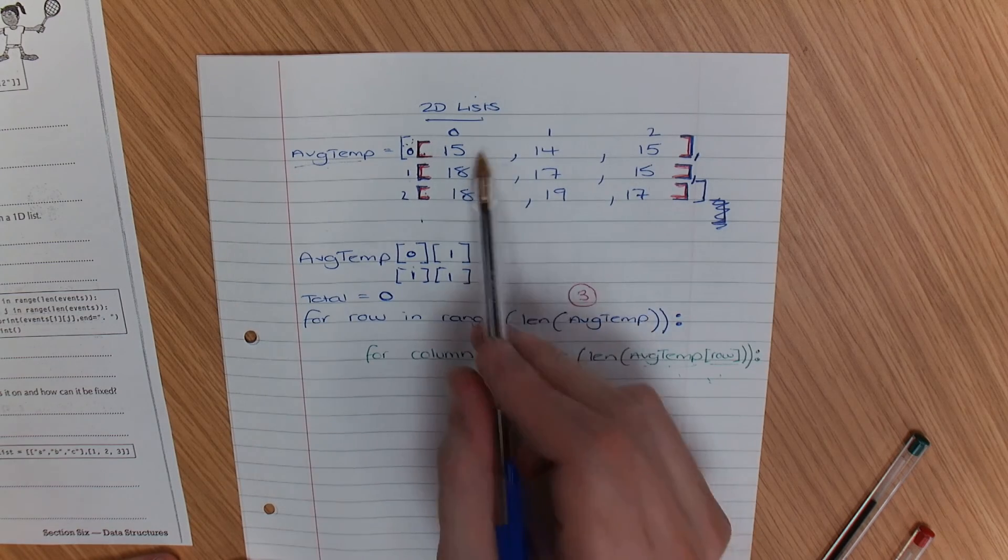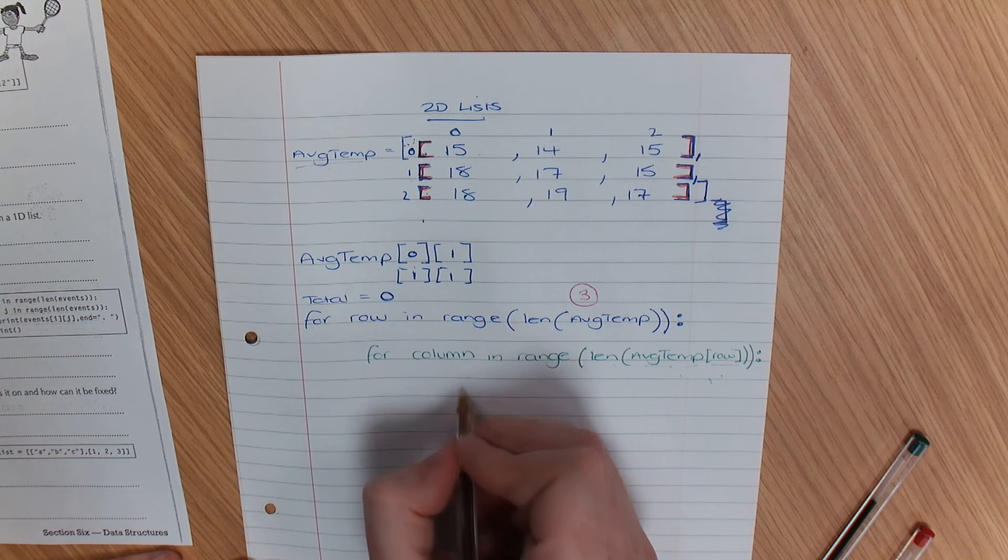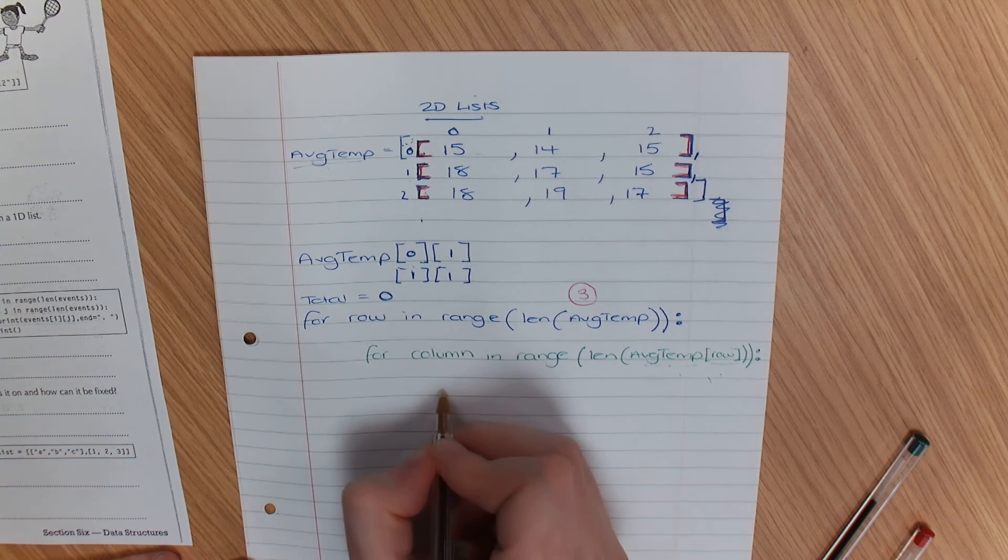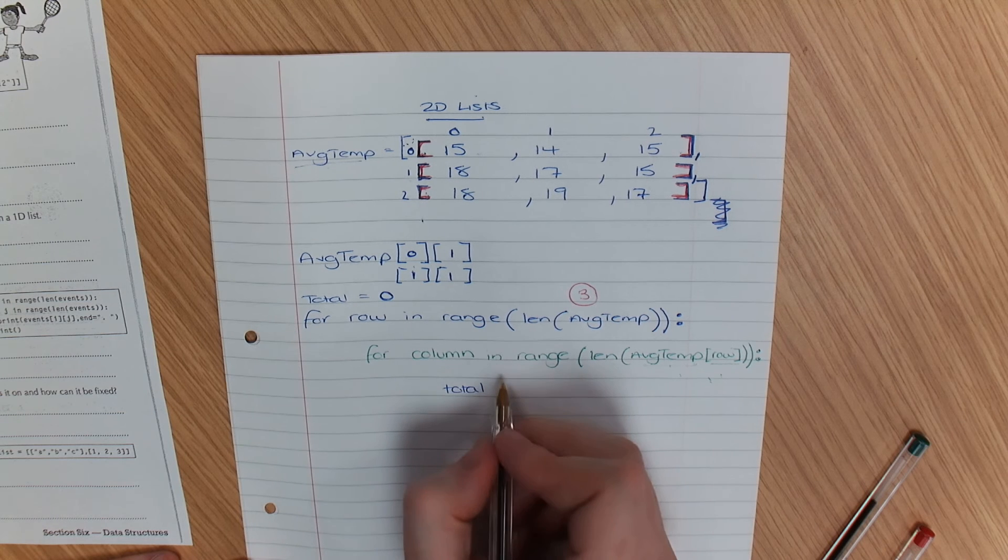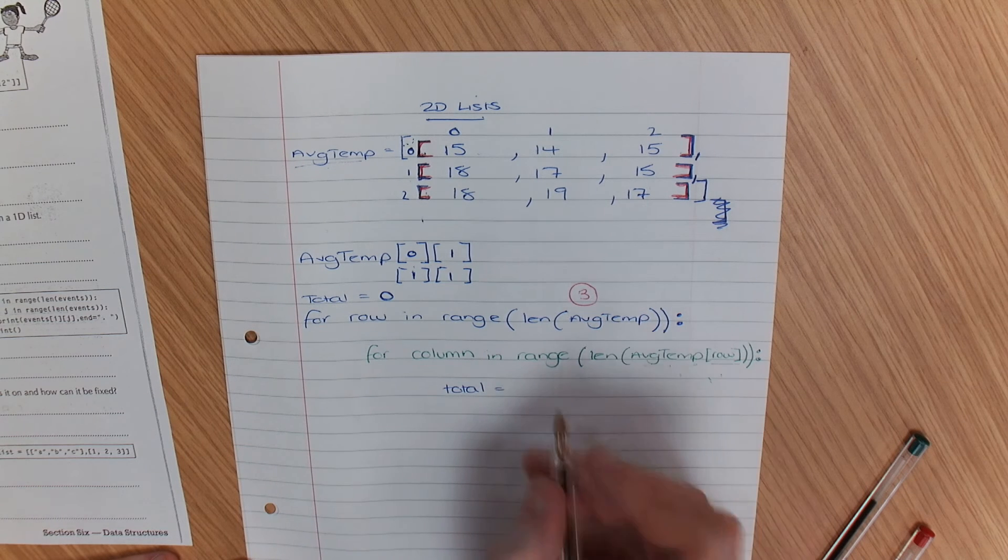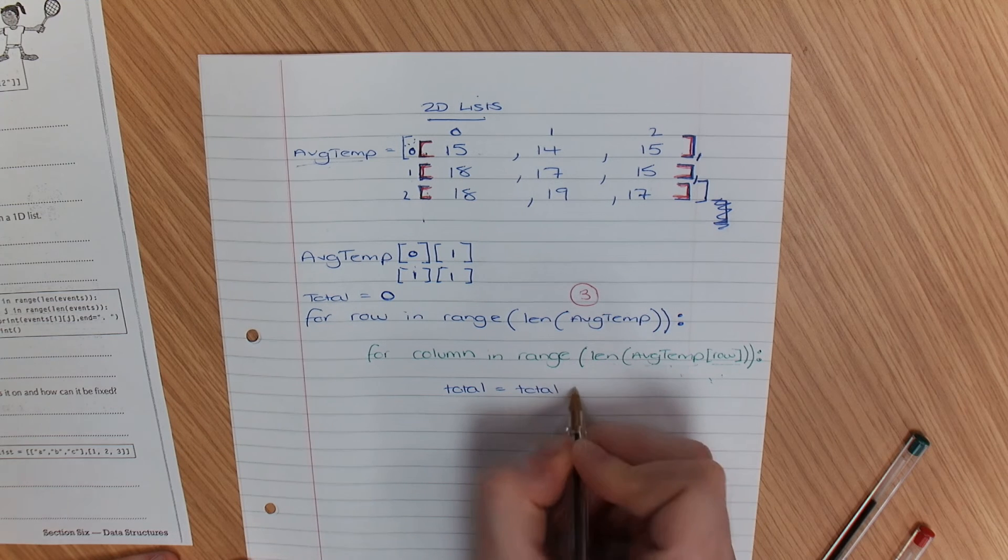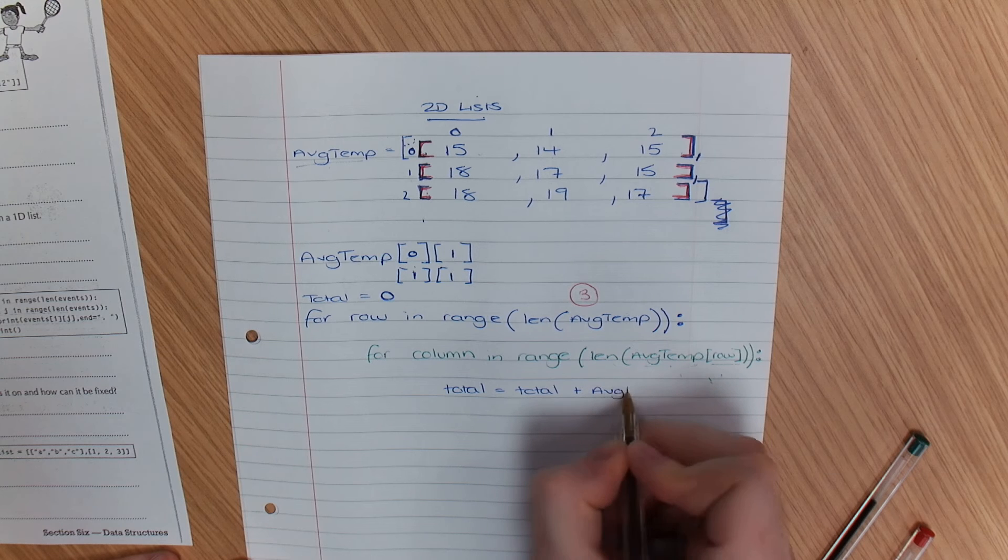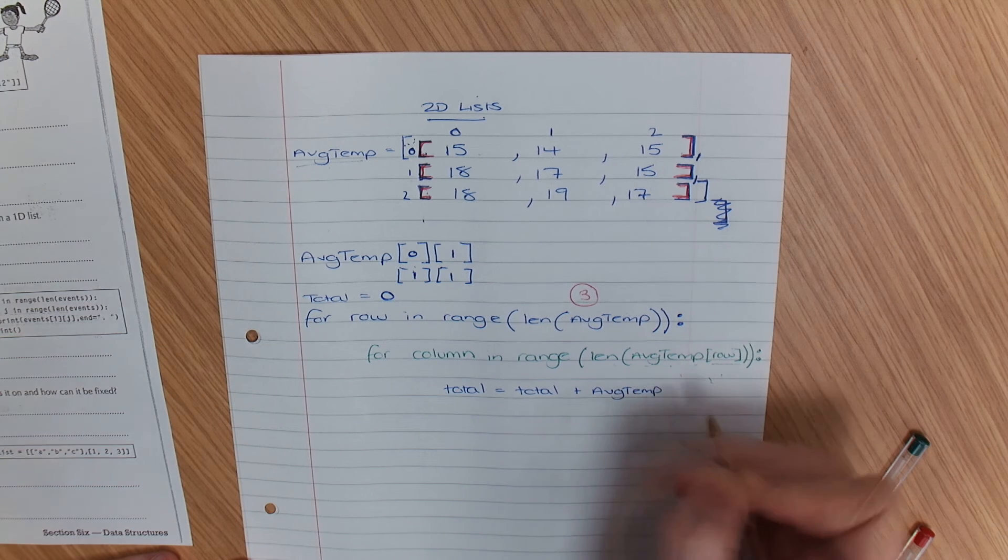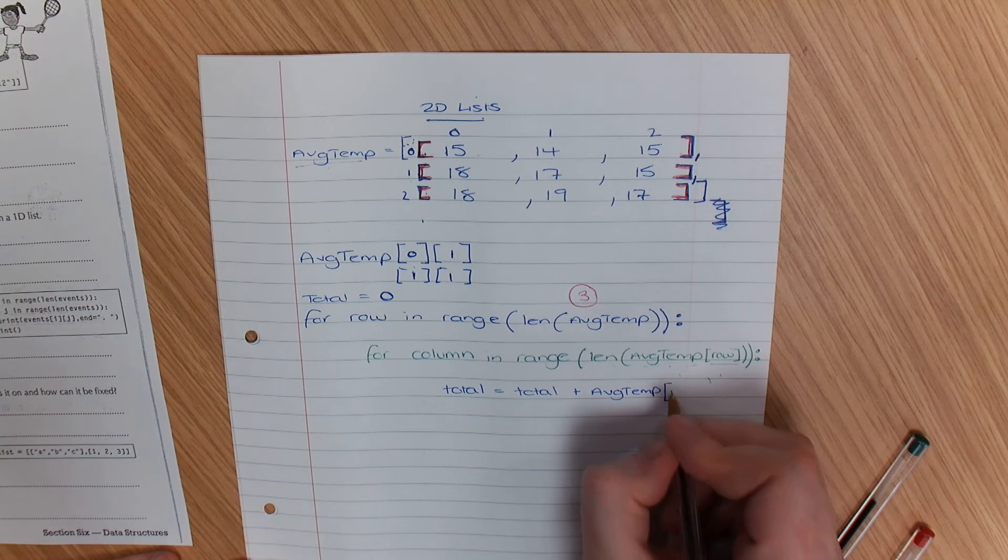What I could do is, each time I go through an item, I could say total equals total plus avg temp, and I could put in there row column.